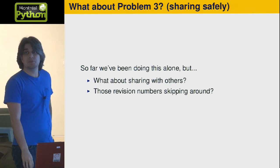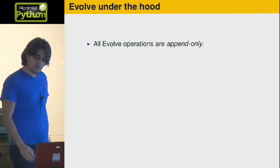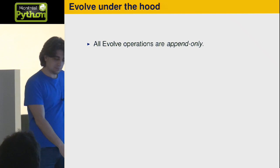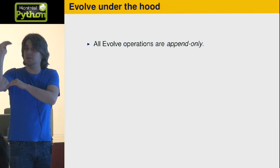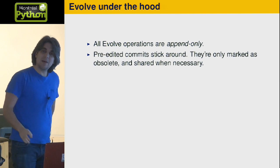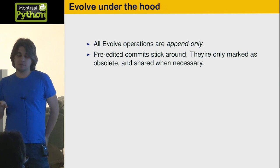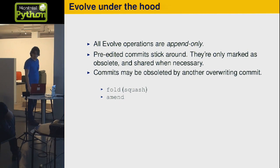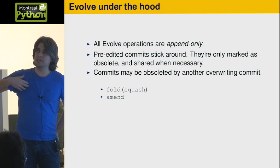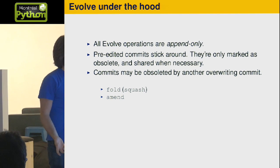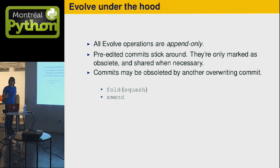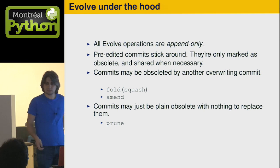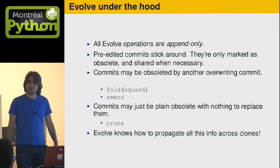What evolve is doing is it's creating a meta-history on top of the history — it's only ever adding things to it, never actually deleting anything. The pre-edited commits, before you rewrote them, still stick around, but they're only marked as obsolete, and they're only shared when they have to be shared. Commits may be obsoleted by another command that overwrites them — a commit knows it's obsolete but that other commit over there is what replaces it. Fold, squash, and amend are commands that do this overwriting. Or commits may just be plain obsolete with nothing to replace them, like with prune. And evolve knows how to propagate all this across clones.